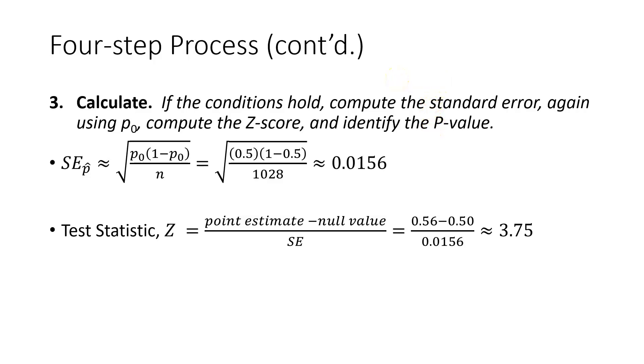You can see on the screen I've shown the formulas for both the standard error and, turning the crank, we get a value of 0.0156 for the standard error. Then we find our test statistic, our Z-score. Taking the point estimate, which is our sample proportion, subtracting the null value of one half and dividing that by the standard error, we get 3.75 for our Z-score test statistic value.